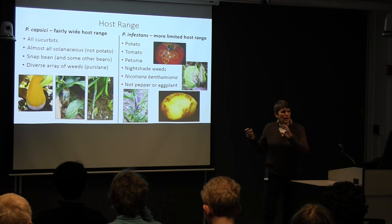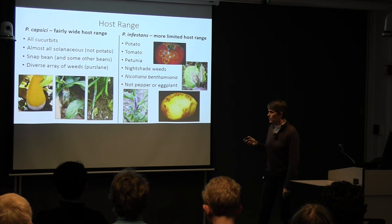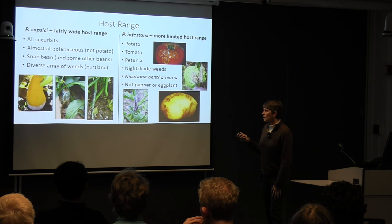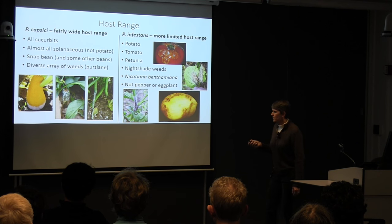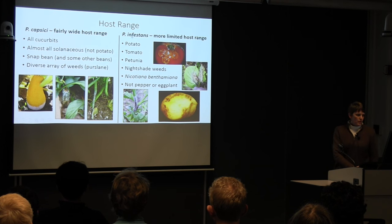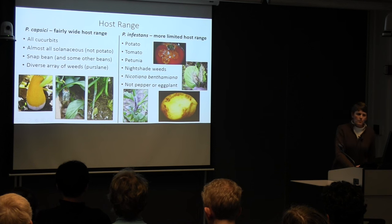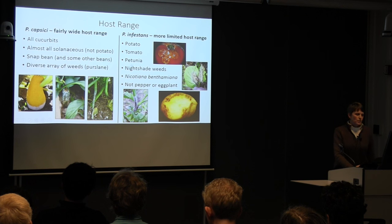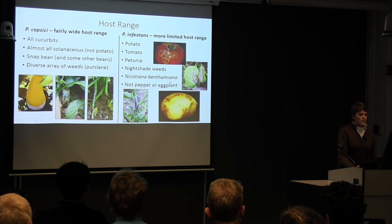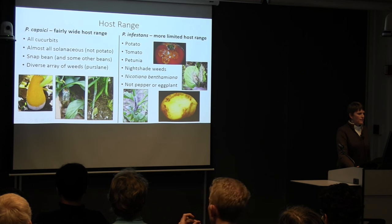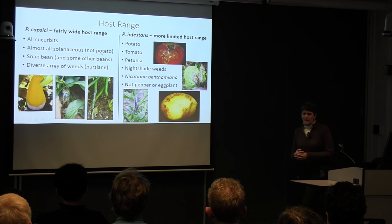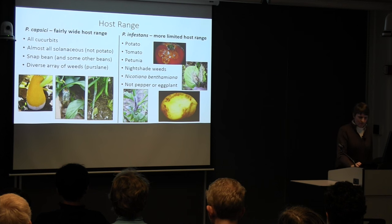The host range of the two pathogens is really quite different. Phytophthora capsici has a much broader host range — it attacks all cucurbits, almost all solanaceous crops but not potato, snap beans, and a diverse array of weeds. Phytophthora infestans has a much more limited host range. The big ones are potato and tomato, plus petunia and nightshade weeds. Even within the solanaceous, it does not attack pepper or eggplant.